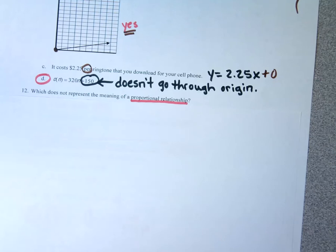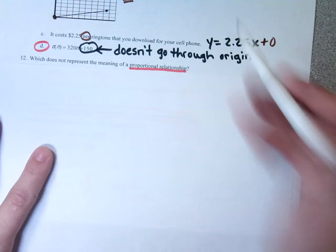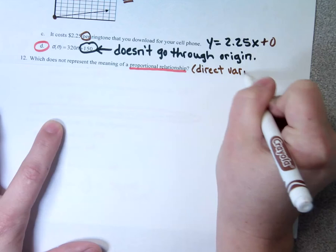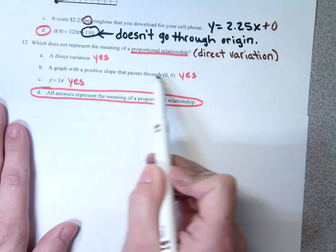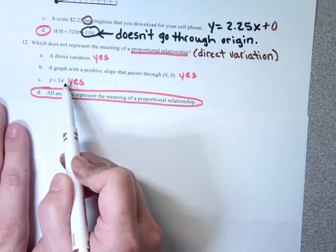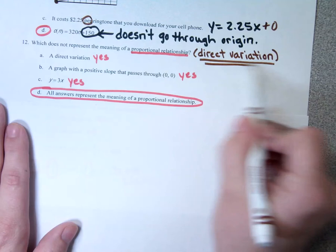The next one wants to know which does not represent the meaning of a proportional relationship. This is the same thing as direct variation — direct variation and proportional relationship mean the same thing: positive slope goes through the origin. A graph with positive slope going through (0, 0) — yes. Y equals 3X has positive slope and goes through the origin because the Y-intercept is 0 — yes. All of these represent a proportional relationship, which is the same as direct variation.